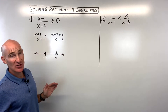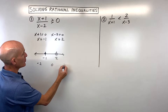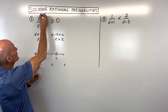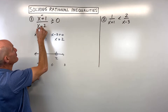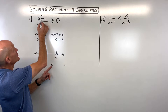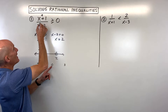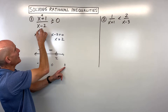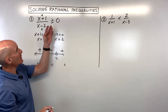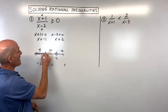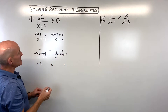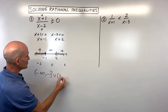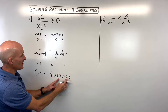Now we're going to do some test points in each of the three intervals — let's test negative two, zero, and three. For negative two: negative two plus one is negative one, and negative two minus two is negative four — a negative divided by a negative is positive. For zero: zero plus one is positive, zero minus two is negative — positive divided by negative is negative. For three: three plus one is four (positive), three minus two is one (positive) — positive divided by positive is positive. We want where it's greater than or equal to zero, meaning positive or zero. Our solution is from negative infinity to negative one, including negative one, and from two to infinity, not including two.